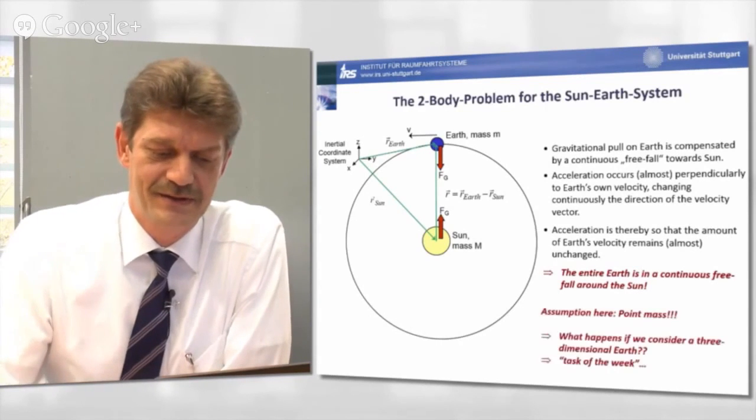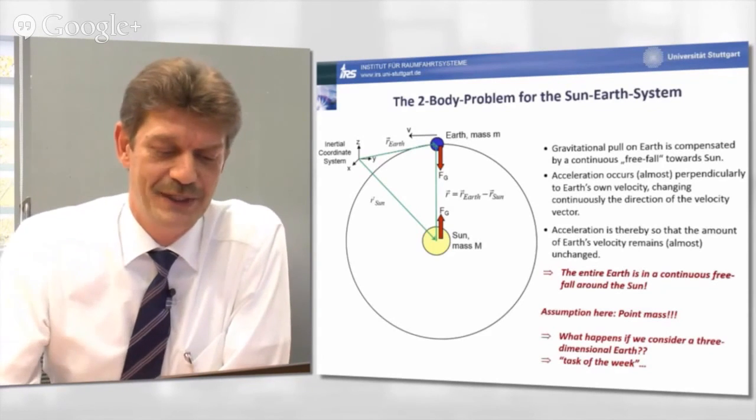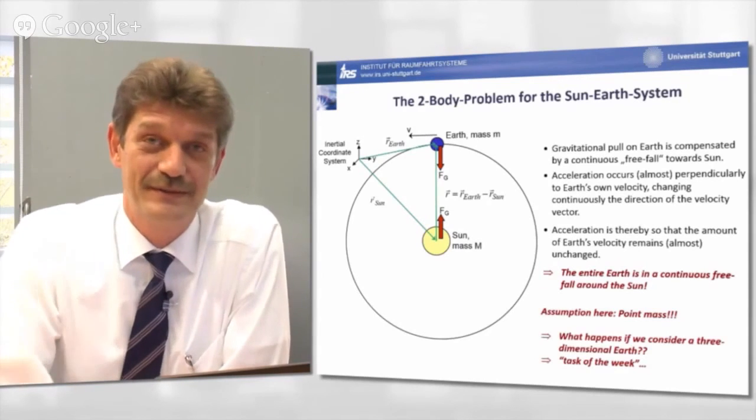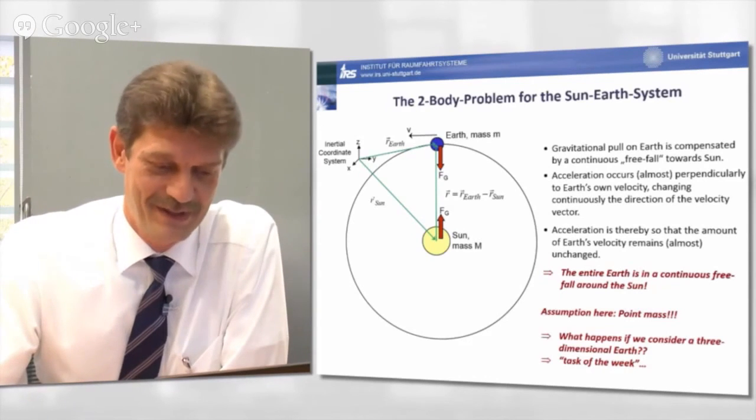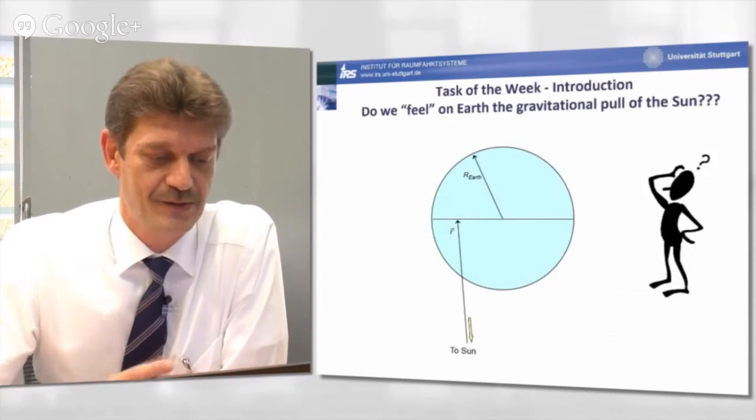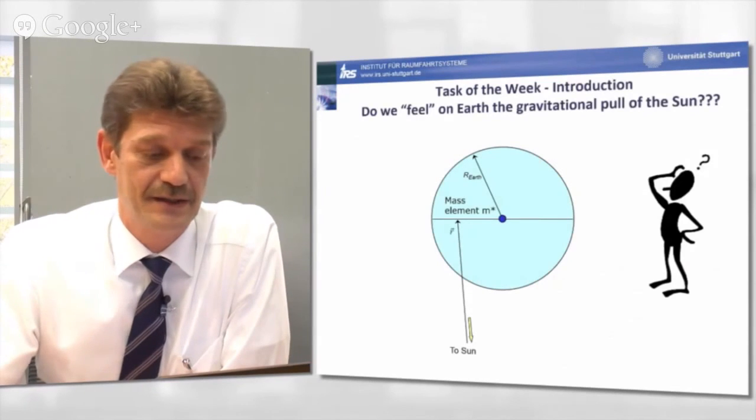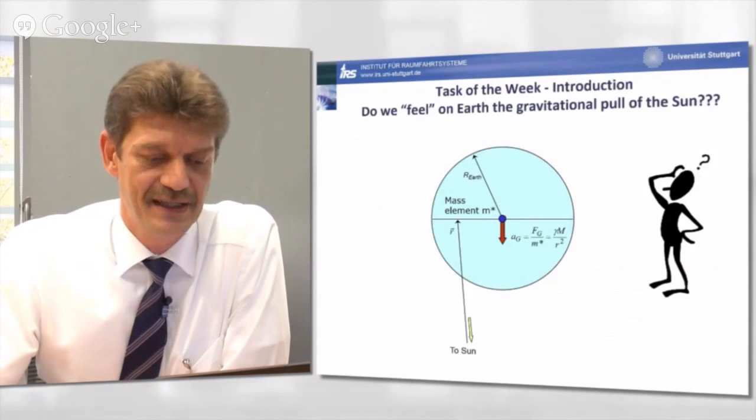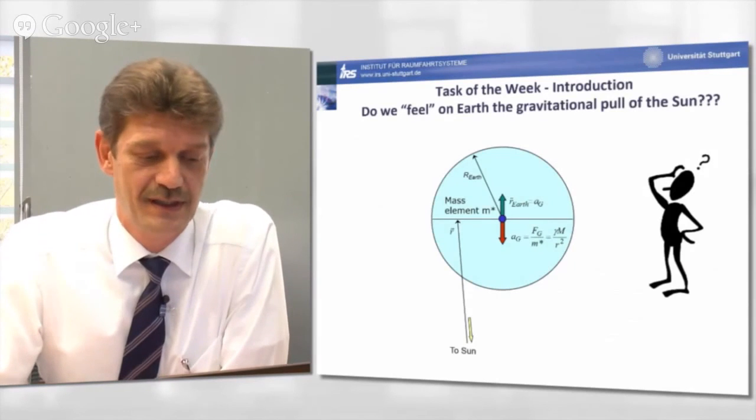This is correct as long as we assume a point mass. Now, what happens if we consider a three-dimensional Earth? And this, indeed, is the task of the week. Assuming that we have a spherical Earth, having a distance to the Sun of R, the radius of the Earth is given, we can easily state that the mass element in the center of the Earth is being accelerated by the gravitational pull of the Sun towards the Sun, and is compensated by a free fall of the Earth, which is equal to the accelerating gravitational pull.